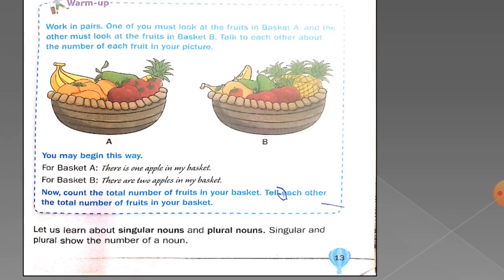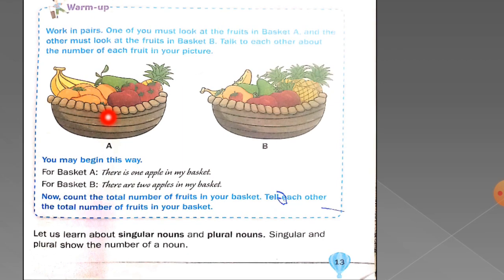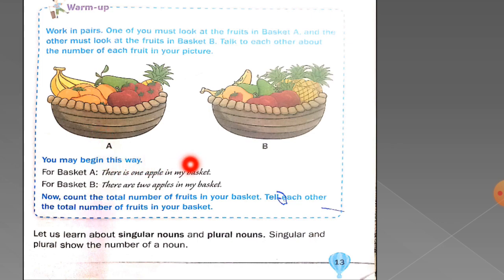Now children, this is basket A — this is your basket, and this is basket B. Tell your parents to play this activity with you; this is your parents' basket. You may begin this way: for basket A, you will say 'there is one apple in my basket.' Now for basket B, your parents will say 'there are two apples in my basket.'